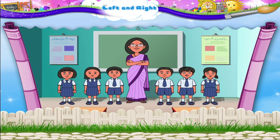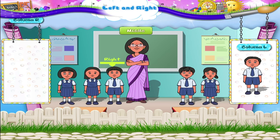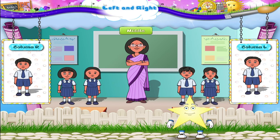Hey, look at these children standing in a row — their teacher is in the middle. Take the child who is on the left of the teacher and put him in the column marked L. Take the child who is on the right of the teacher and put him in the column marked R. Very good!